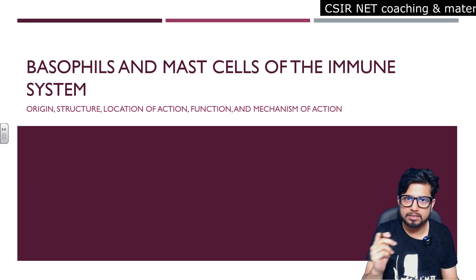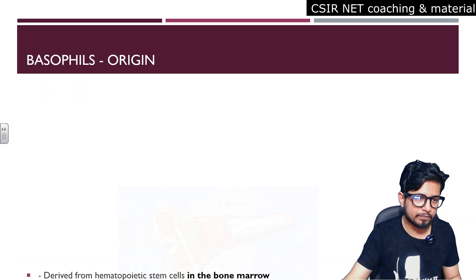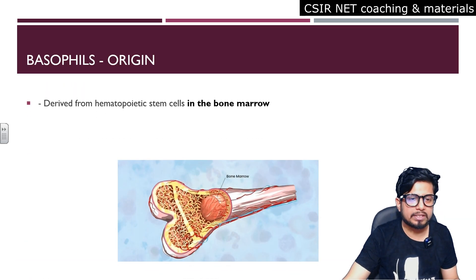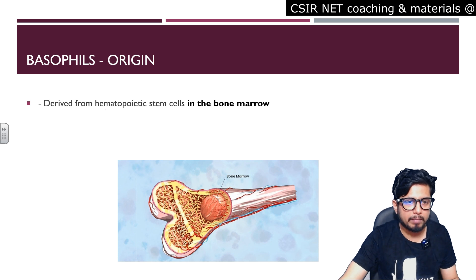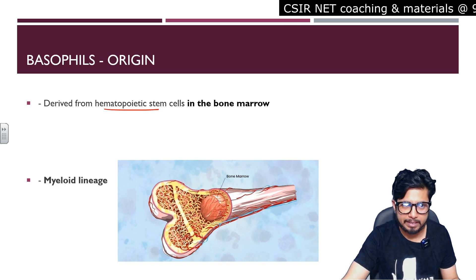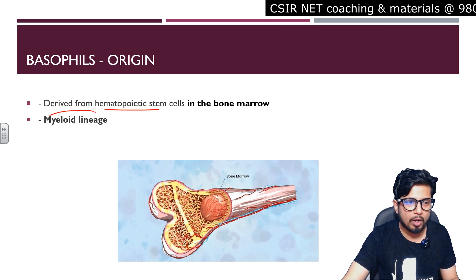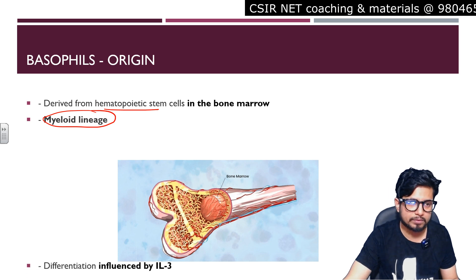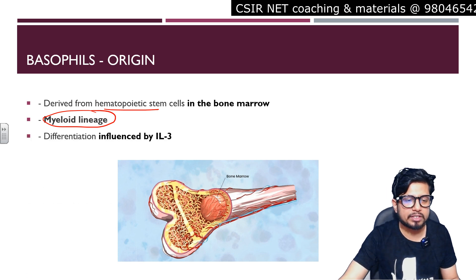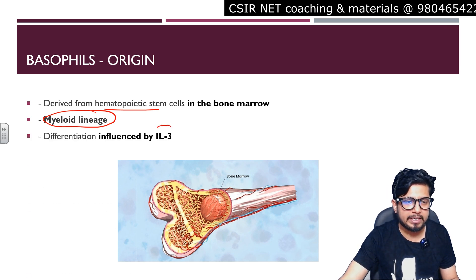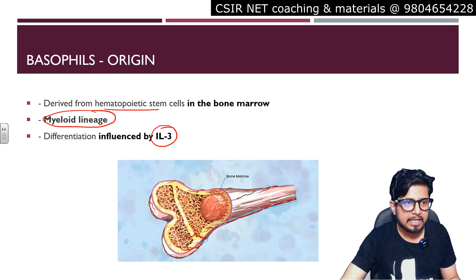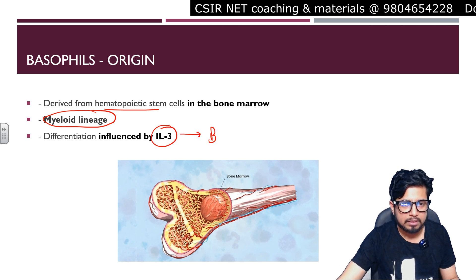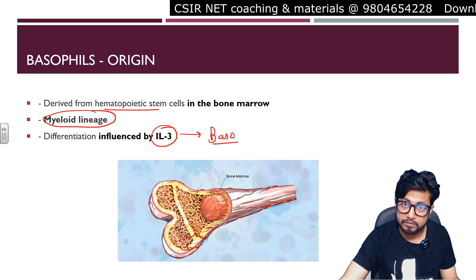Let's start with the origin of the basophils. They are originated in the bone marrow from the hematopoietic stem cells and from the myeloid lineage, not the lymphoid lineage. The differentiation is influenced by interleukin-3, or IL-3.